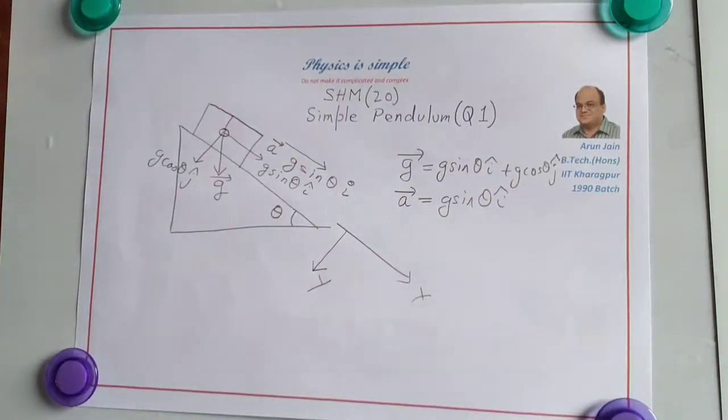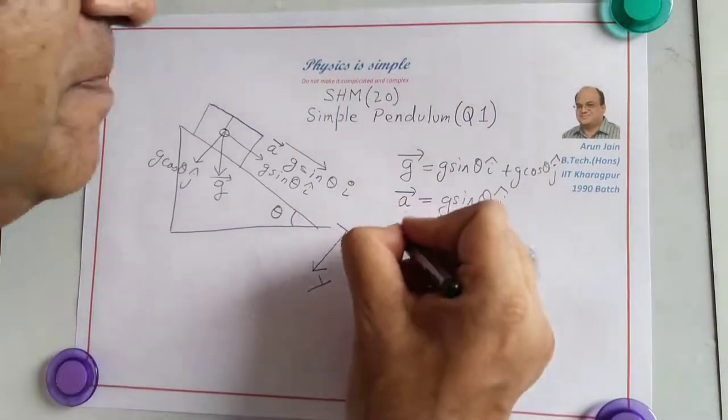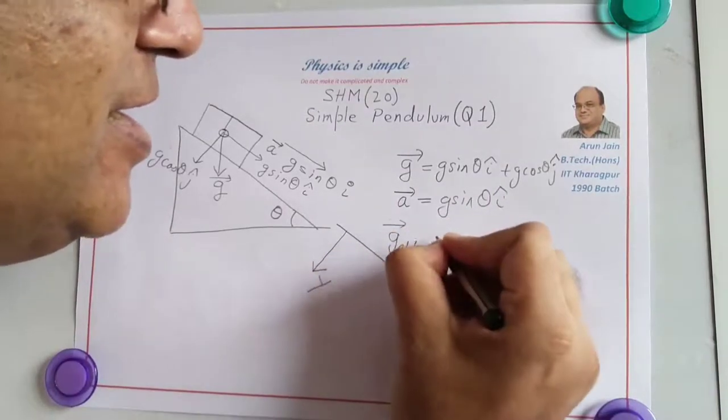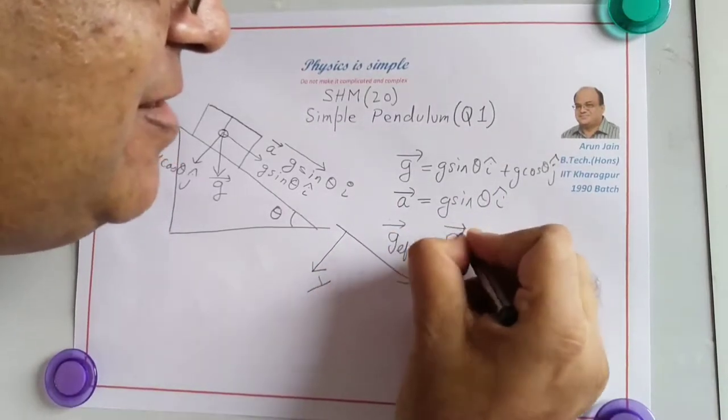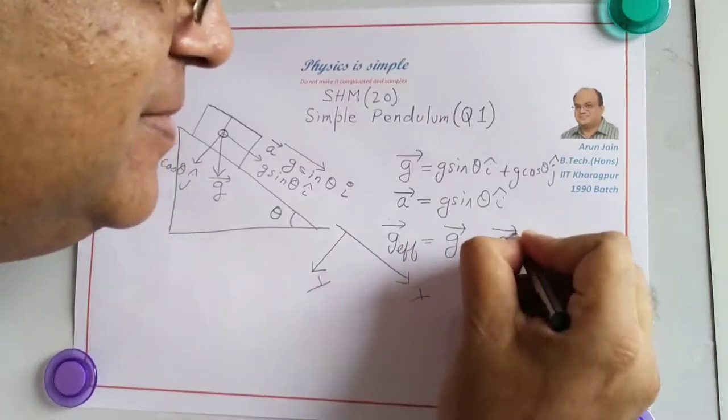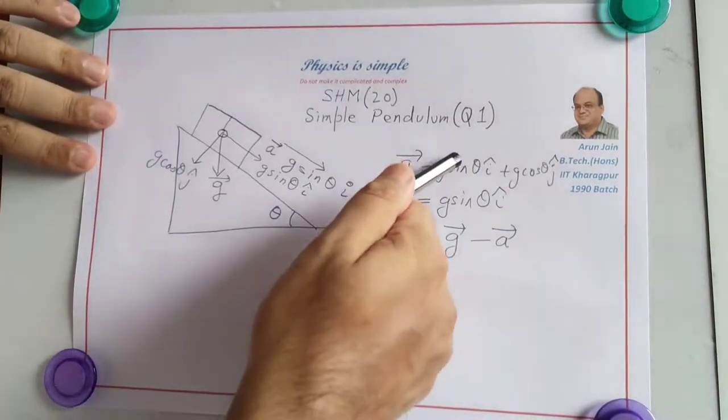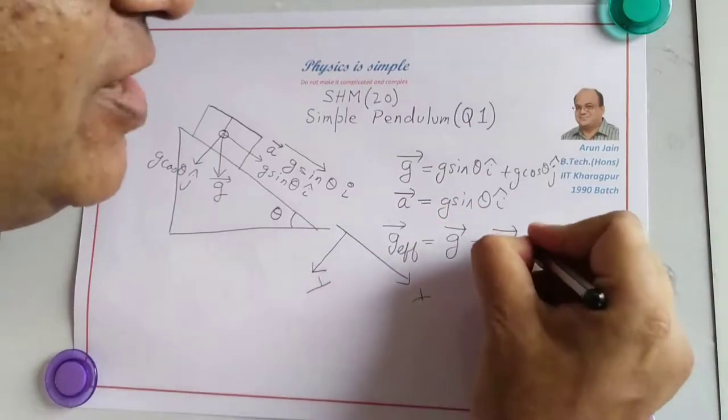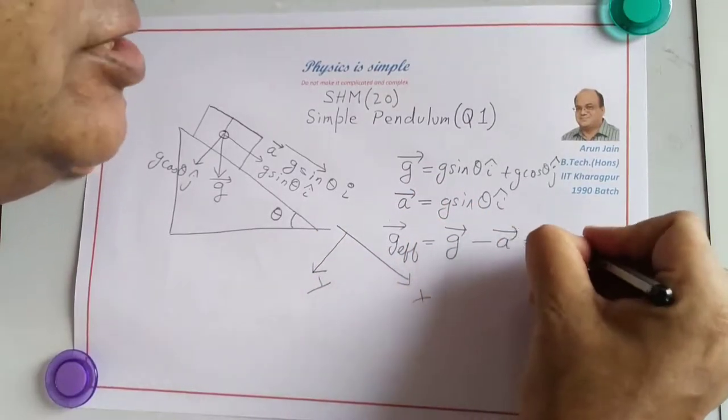Therefore, the G effective will be G minus the acceleration. And if we subtract these two, G sine theta i-cap will cancel out. Only thing left is G cos theta j-cap.